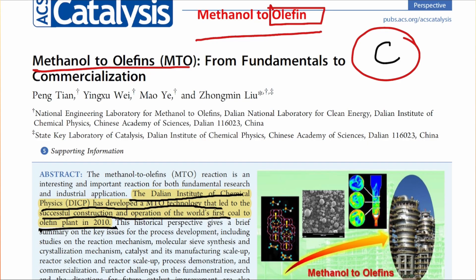Due to human activities, huge amounts of carbon dioxide have been added to the atmosphere. World leaders met in Glasgow for the COP26 meeting and declared they will reduce carbon dioxide emissions and reach net zero. For example, Prime Minister Narendra Modi declared India will reach net zero status by 2070. However, we are still producing electricity mainly from coal, which is a dirty fuel responsible for global warming and climate change.